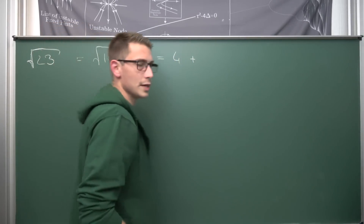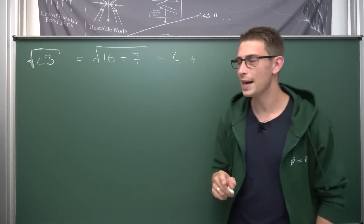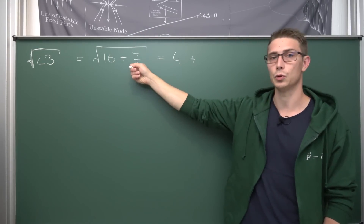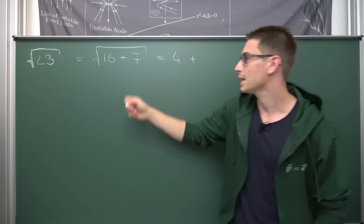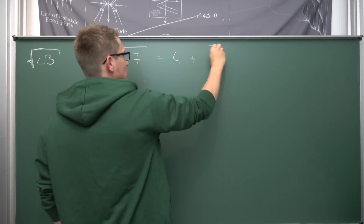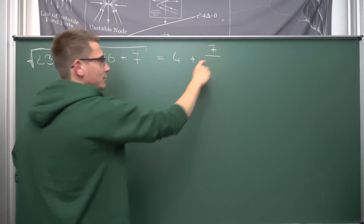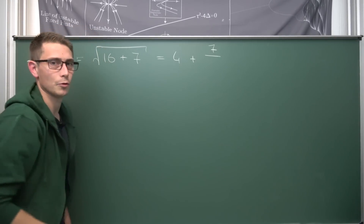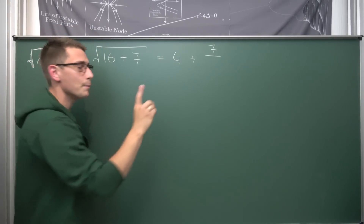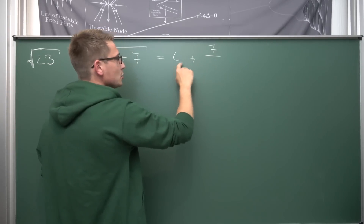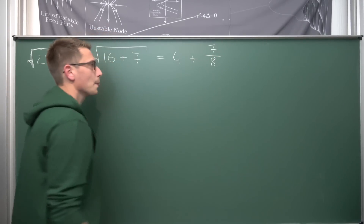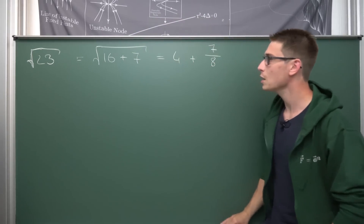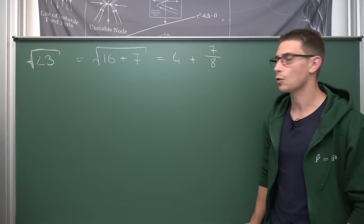Then what you are going to do is add the remainder — which is 7 — and divide it by the square root of your perfect square, but doubled. So 2 times 4 gives us 8. This gives us the approximation: 4 plus 7 over 8.